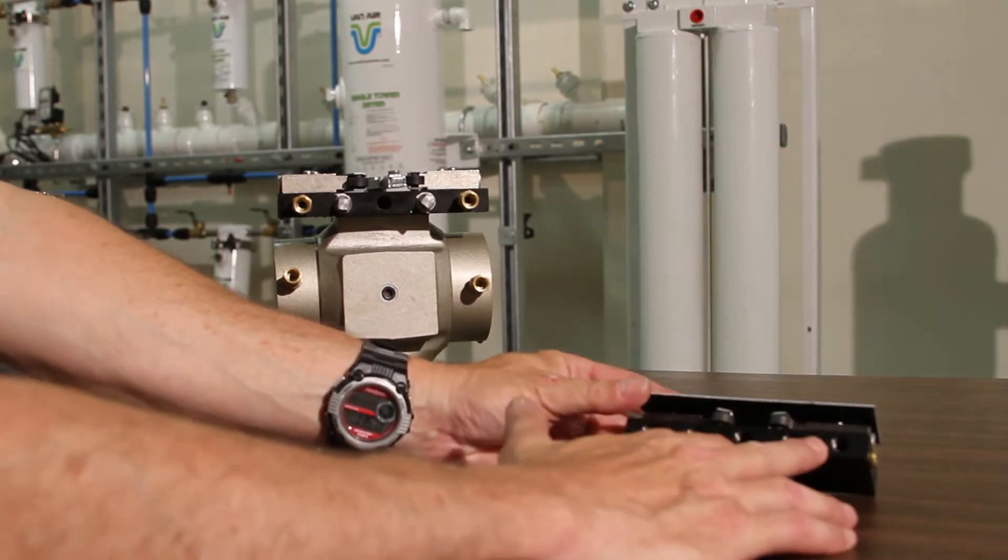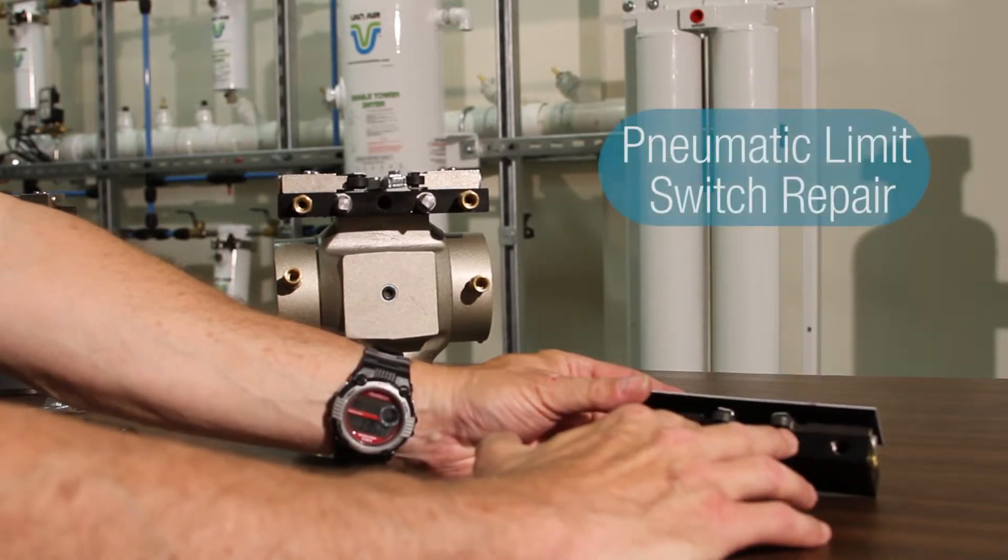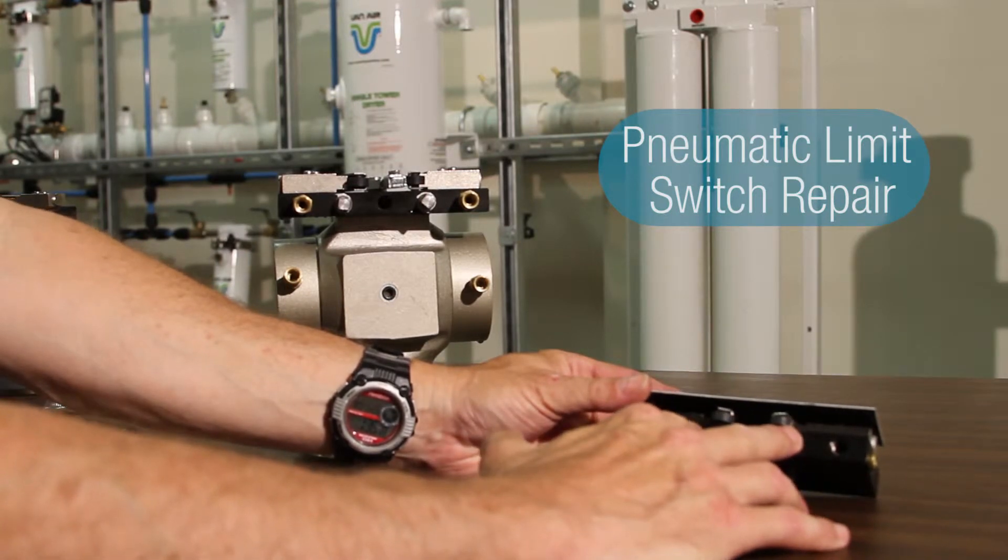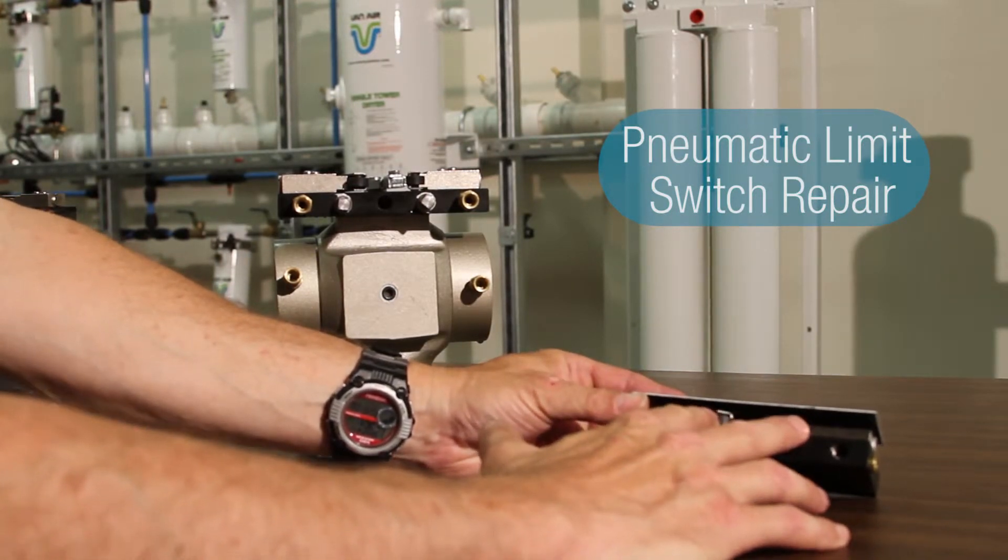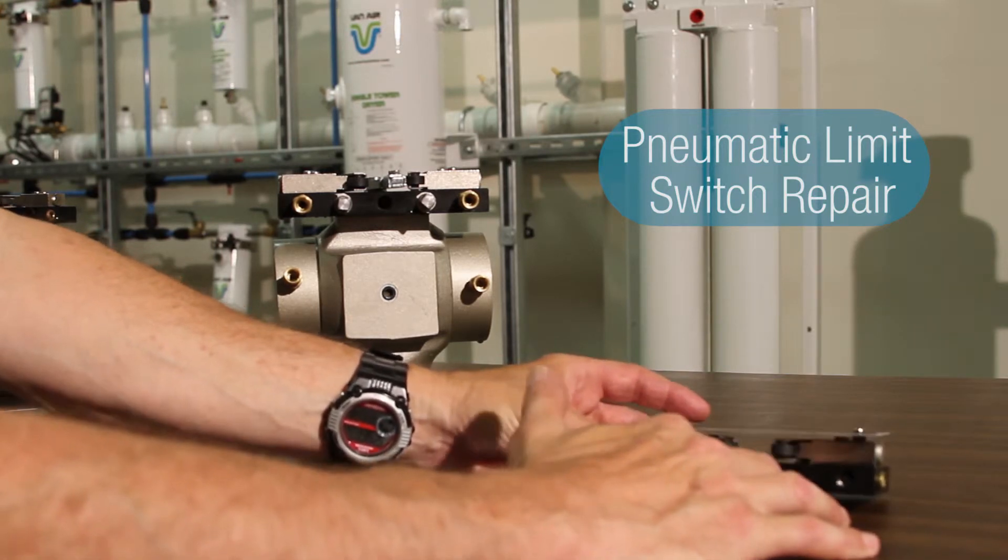You usually don't need the complete manifold block. All it is is a ported manifold block, and the manifold block hardly ever goes bad. So all you really need is the pneumatic limit switches on the unit.